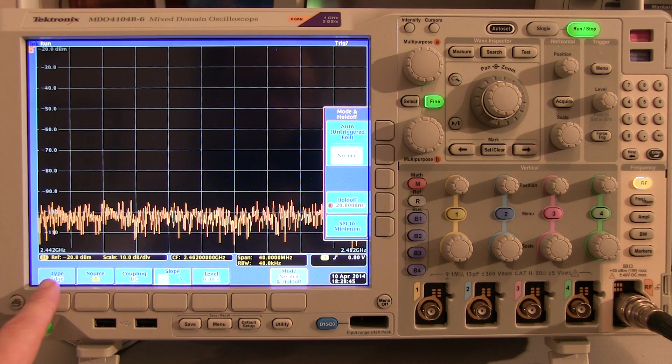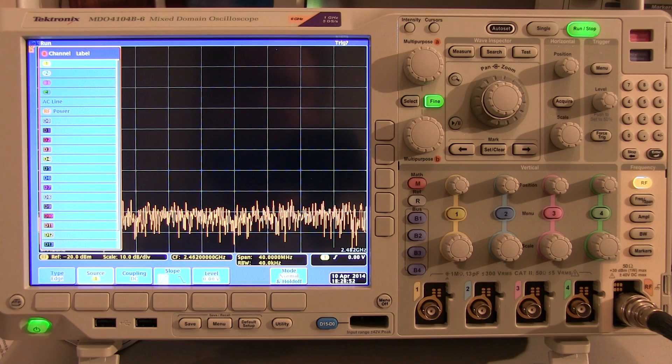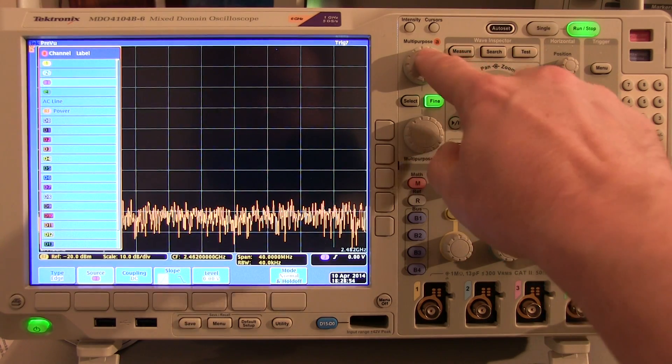So the next thing we want to do is set up what do I want to trigger on. I want to trigger on the rising edge of RF power. So I'll use the edge trigger, but I'm going to change my source from Channel 1 down to RF power.